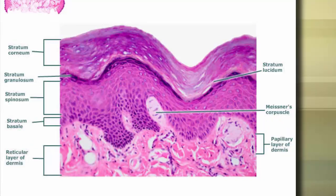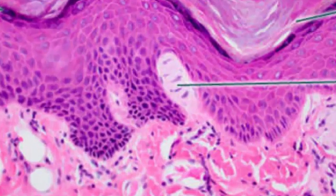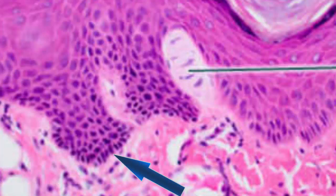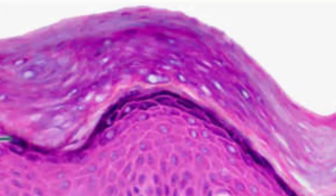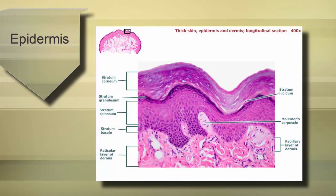There are only two of these cell layers that I would like you to be able to recognize, point out, and know something about, and that is the stratum basale and the stratum corneum. The main cell of the epidermis is the keratinocyte, which produces a protein called keratin — very hard and strong — and keratin is also found in nails and hair. The stratum basale is the deepest and most mitotically active layer of the epidermis, and all other layers are derived from these cells. As cells migrate toward the surface they become filled with keratin and begin to die. By the time they reach the surface as the stratum corneum, these cells are flat and scale-like and are sloughed off.